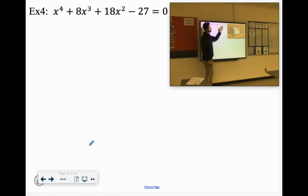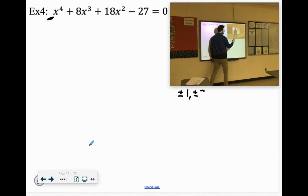Alright, so we look at our last number, it's 27, so we're looking at factors of 27 over factors of 1. So factors of 27 include plus or minus 1, plus or minus 3, plus or minus 9, and plus and minus 27.